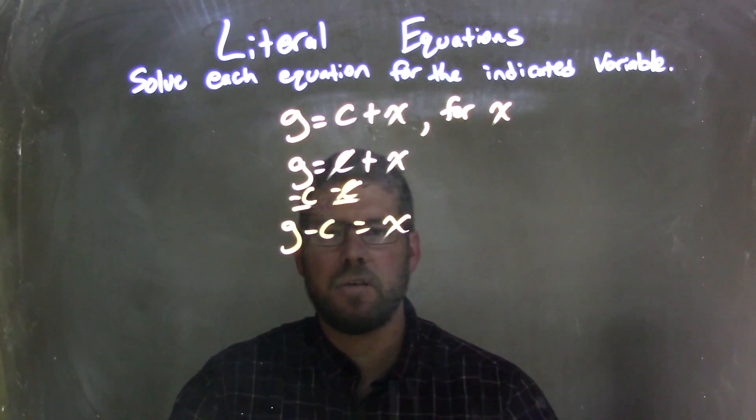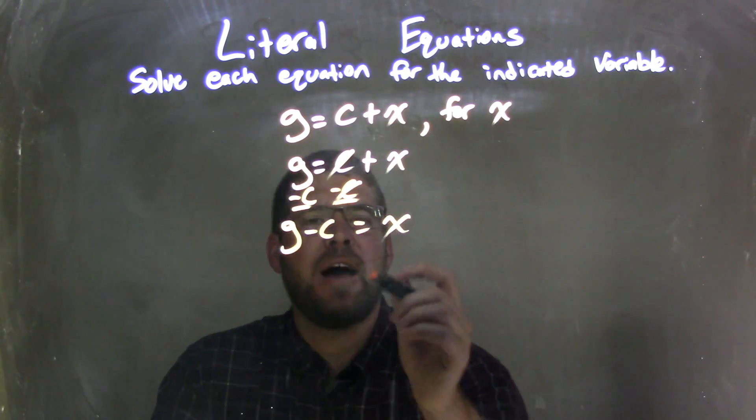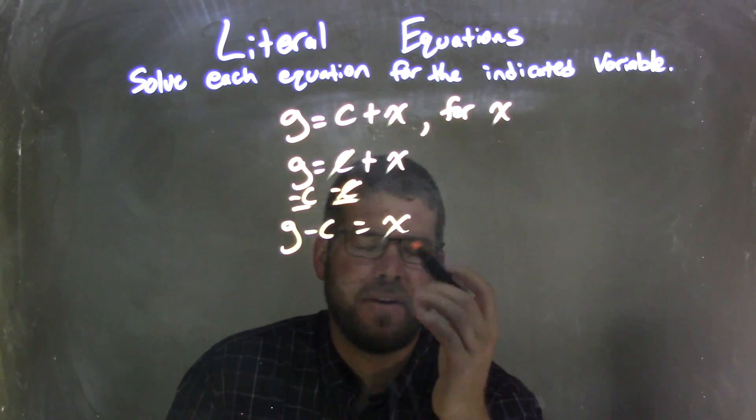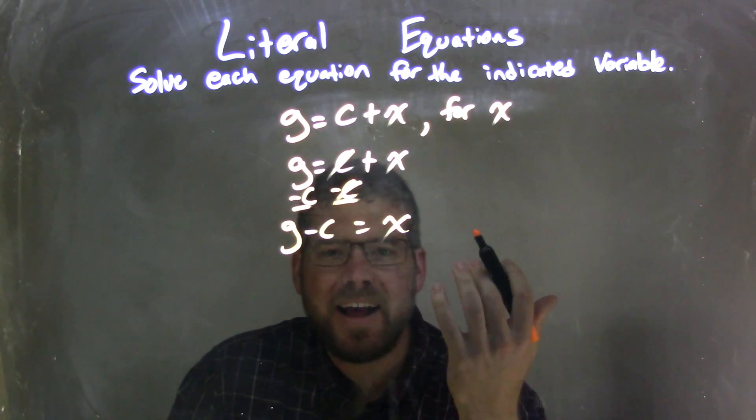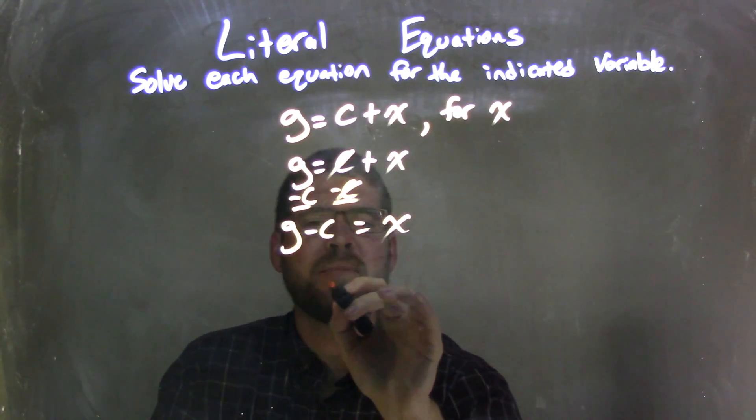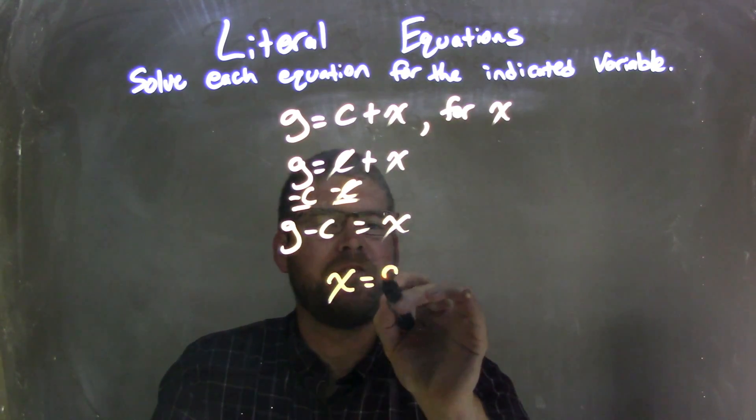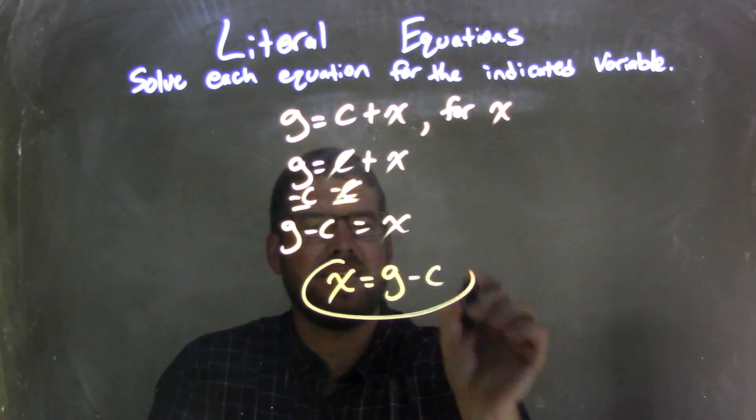x is isolated, fantastic, looking pretty good. And so now I just need to put x by itself—or sorry, it is by itself. I'm going to write it coming first because that looks nicer. So I have x coming first, I have the g minus c here on the left, and that's it. A very simple problem right here.